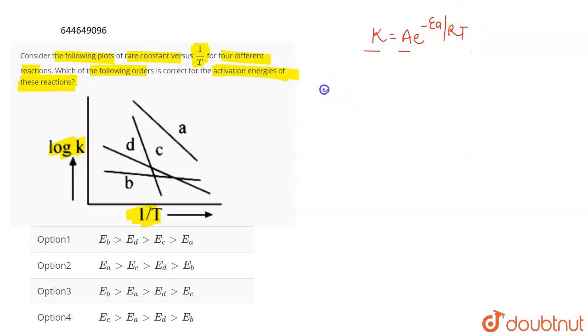Now, if we take natural log on both sides, we get ln K is equal to ln A minus Ea by RT. ln e is equal to 1, so we can simply remove this term from here.